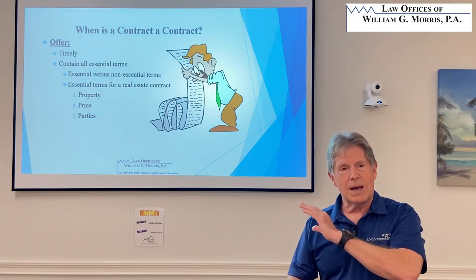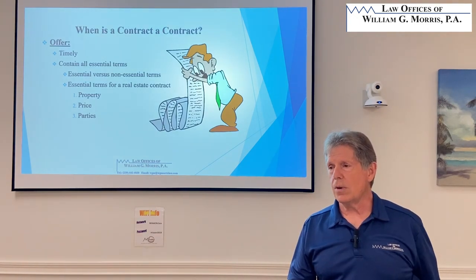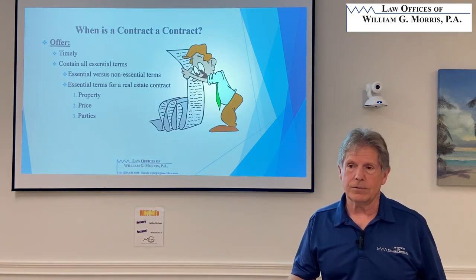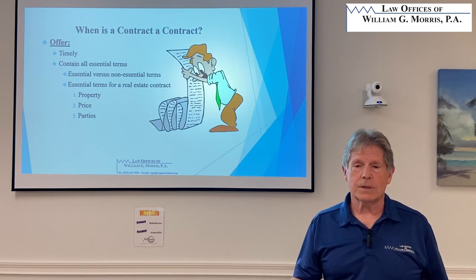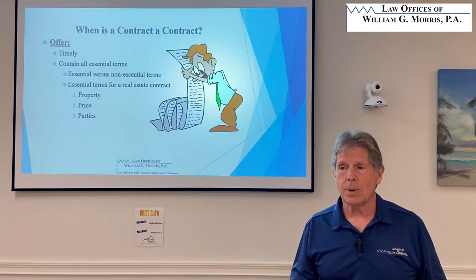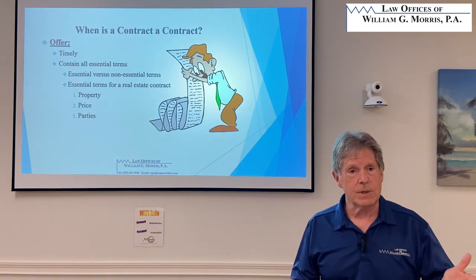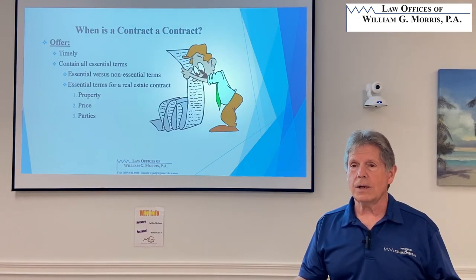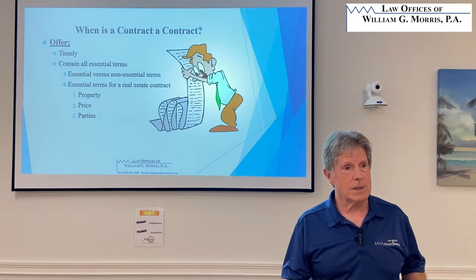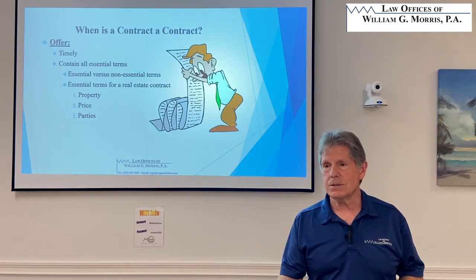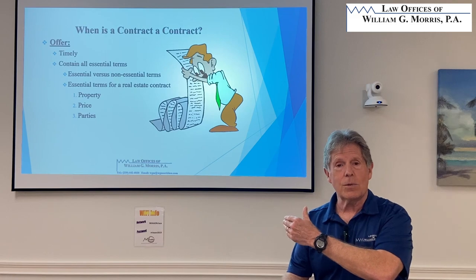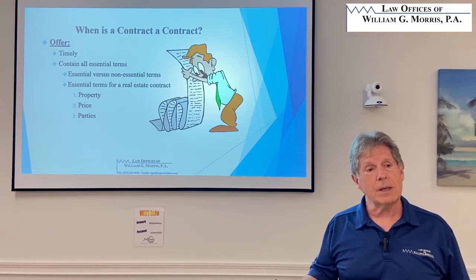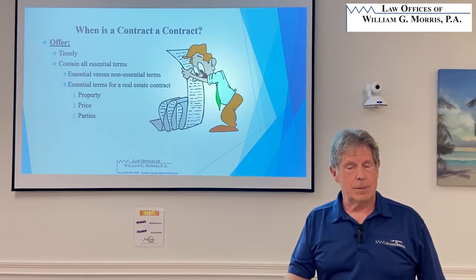One of the matters has to be timely. Both the FAR BAR and NABOR contracts have a deadline for accepting the offer or counteroffer. Both forms say that if the offer creates a counteroffer, we extend the deadline by two days or some other period of time. You have to check if the acceptance is timely. The FAR BAR contract says time is of the essence. The NABOR contract, the only thing that clearly says time is of the essence is the closing date. If a date for acceptance passes and it comes back after that date, do you have a contract?